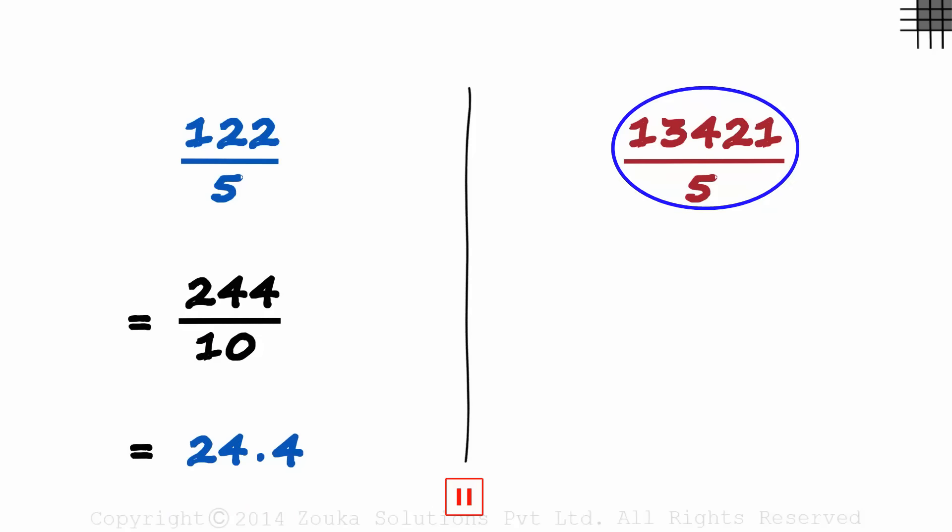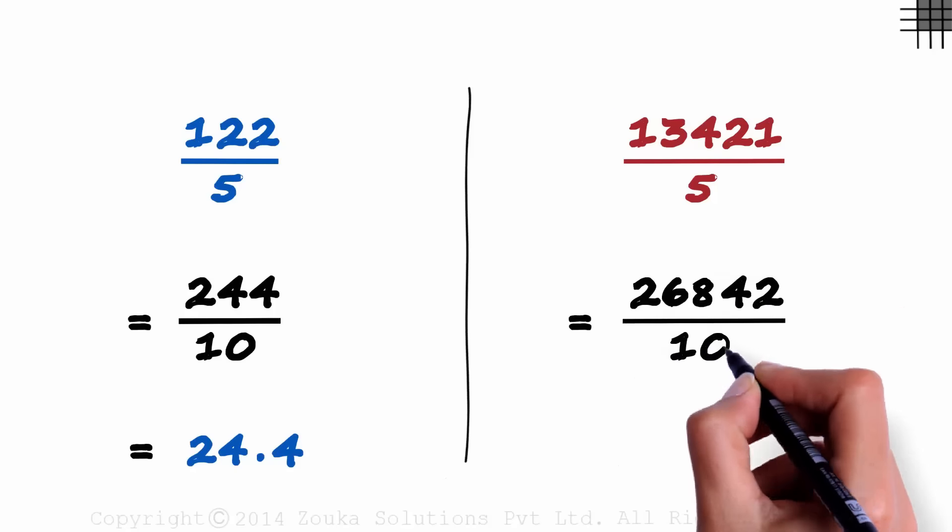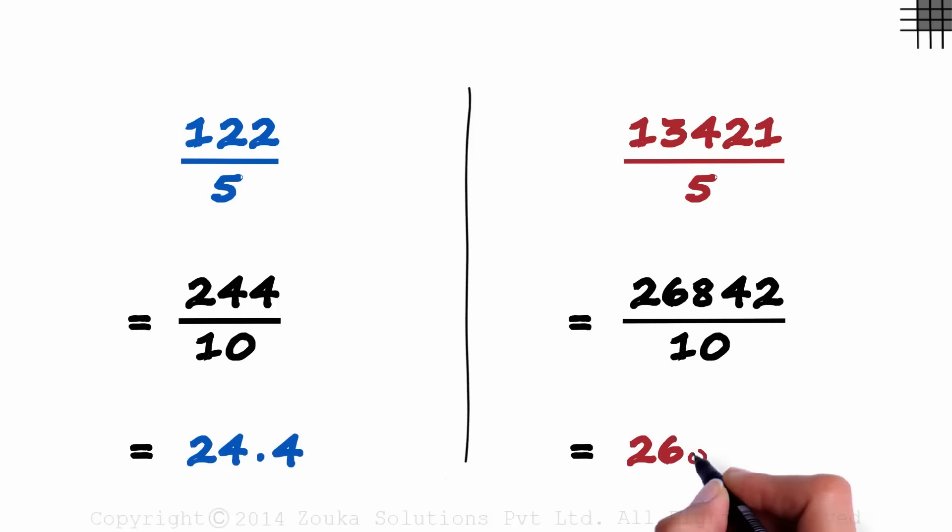It's easy! Multiplying it with 2 gives us 26,842, and we divide it by 10, and that gives us 2684.2.